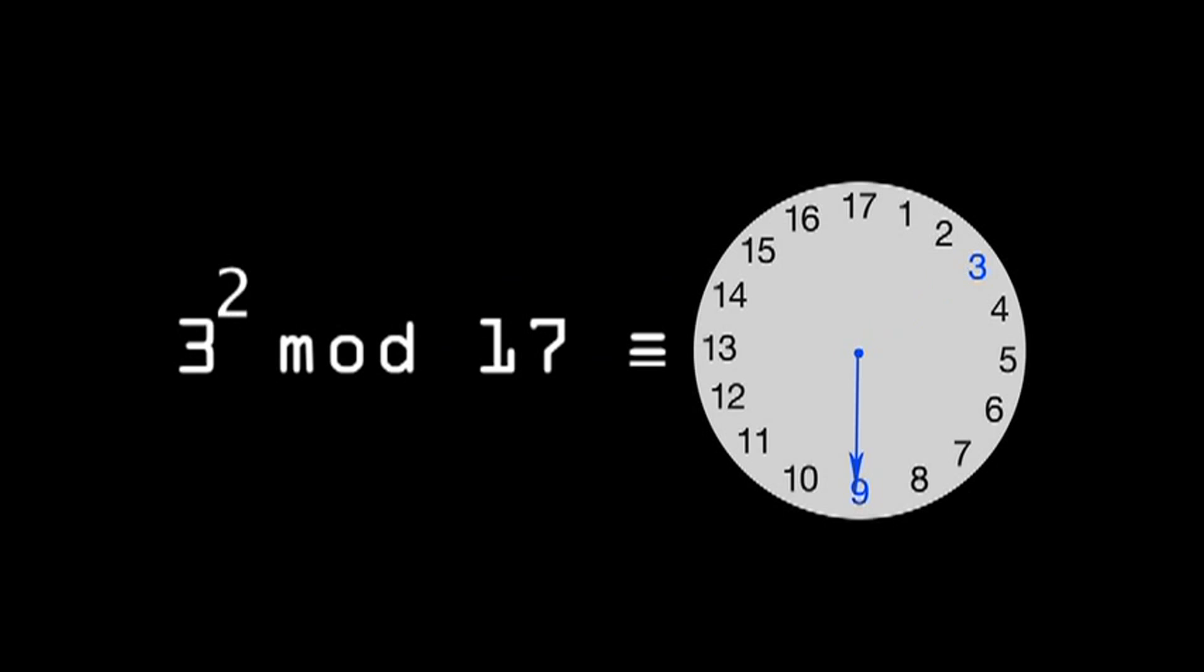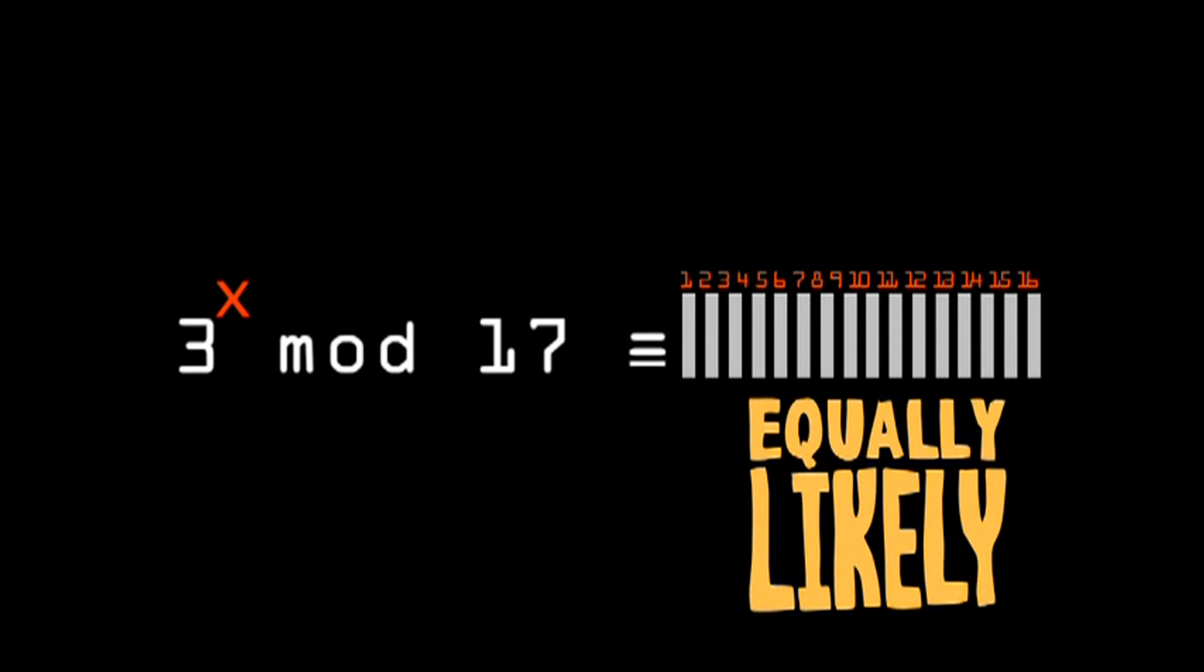which has this important property that when raised to different exponents, the solution distributes uniformly around the clock. 3 is known as the generator. If we raise 3 to any exponent x, then the solution is equally likely to be any integer between 0 and 17.